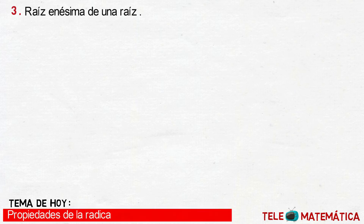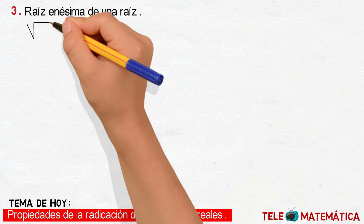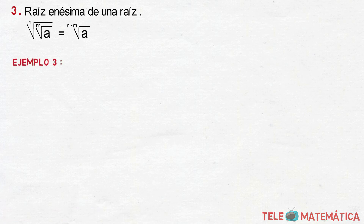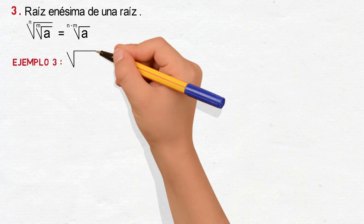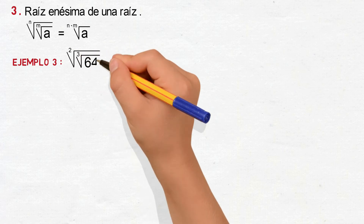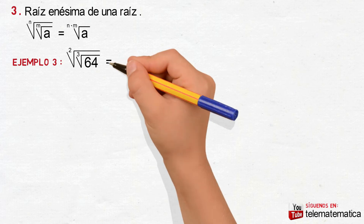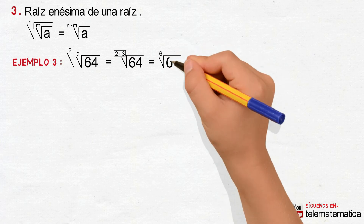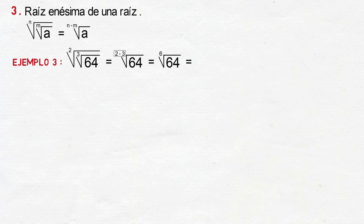Propiedad número 3: raíz enésima de una raíz. Se define como raíz enésima de la raíz emésima de A; esto va a ser igual a multiplicar los índices y conservar el subradical. Veamos un ejemplo: raíz cuadrada de la raíz cúbica de 64. Aplicando la propiedad, multiplicamos los índices 2 por 3 y conservamos el subradical. Resolviendo el producto de los índices, nos quedaría raíz sexta de 64 y, aplicando la raíz de un número real, esto sería igual a 2.